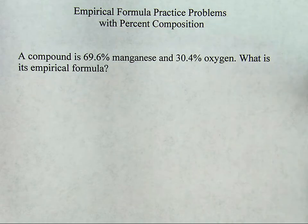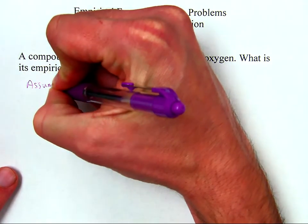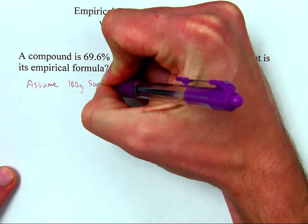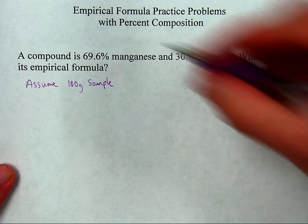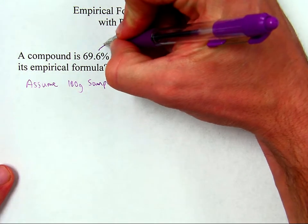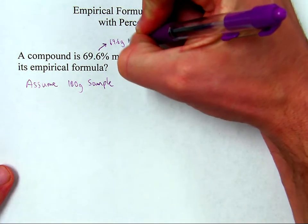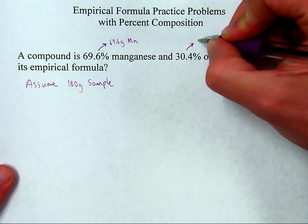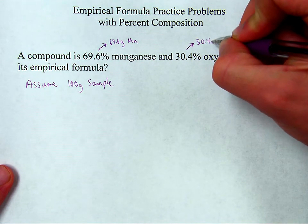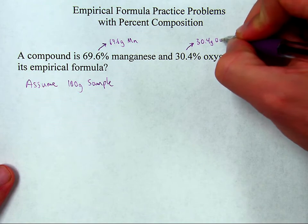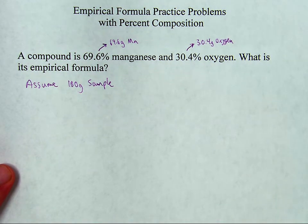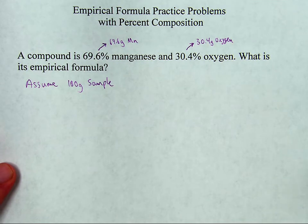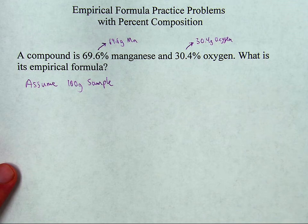Assume a 100 gram sample. Okay, if you have a 100 gram sample, that means that your 69.6% becomes 69.6 grams of manganese and the 30.4% oxygen becomes 30.4 grams of oxygen. You can use that to solve for the answer. And by the way, this works because it doesn't matter if you have a handful or a truckload of this stuff. It's going to have the same chemical formula either way. So 100 grams works just fine.